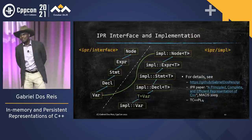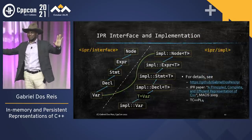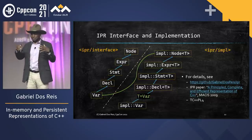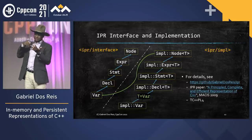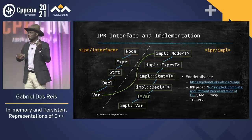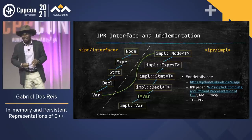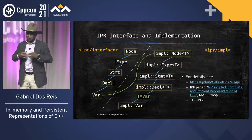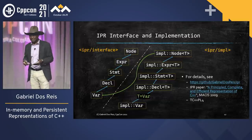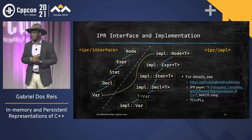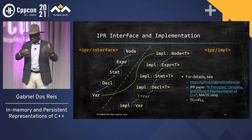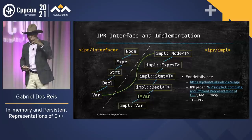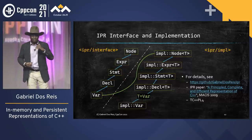Concretely, we have a separation of interface and implementation. On the interface side, a variable is a declaration — you have a class 'Var' derived from 'Decl' for declaration. A declaration is a specification of a type for a name in a given scope, with possibly an initializer. All declarations fit that model. The interface classes do not carry any data; they are there only to provide query operations, with no implementation detail in any form.